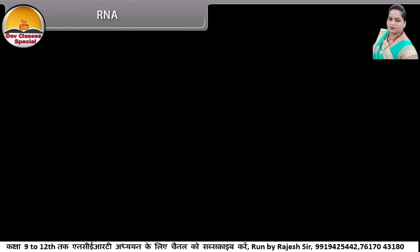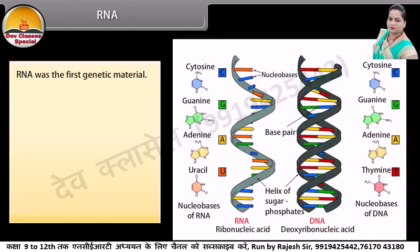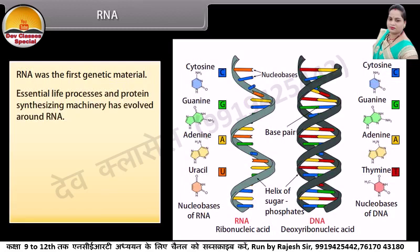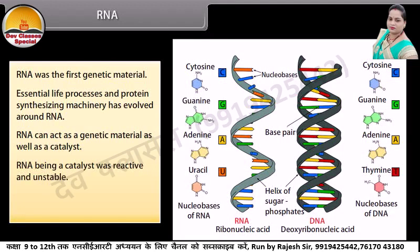RNA was the first genetic material. Essential life processes and protein synthesizing machinery evolved around RNA. RNA can act as a genetic material as well as a catalyst. However, RNA being a catalyst was reactive and unstable. Thus, DNA evolved as a stable genetic material from RNA.